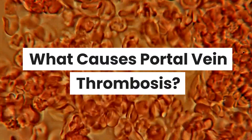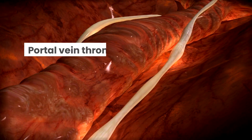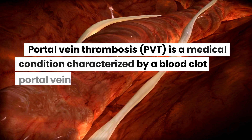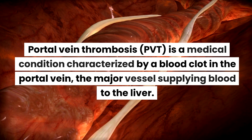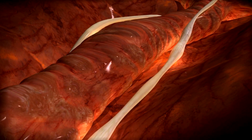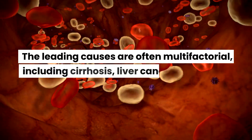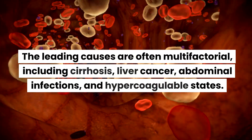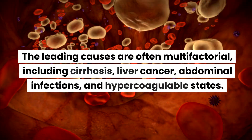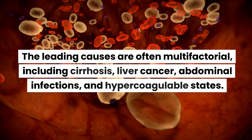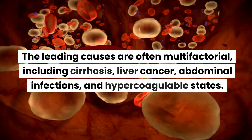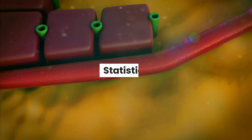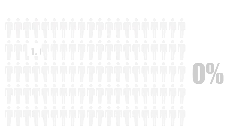What causes portal vein thrombosis? Portal vein thrombosis (PVT) is a medical condition characterized by a blood clot in the portal vein, the major vessel supplying blood to the liver. The leading causes are often multifactorial, including cirrhosis, liver cancer, abdominal infections, and hypercoagulable states.